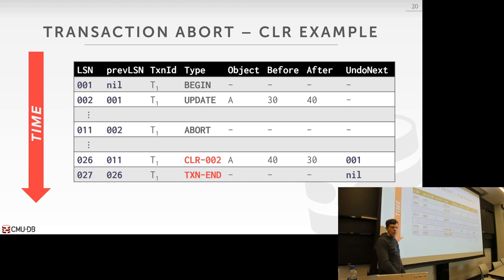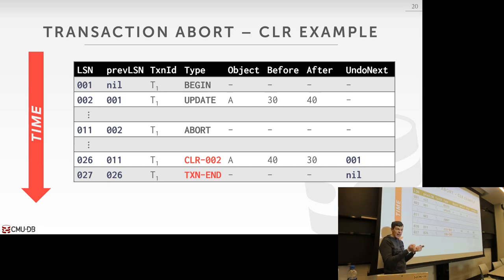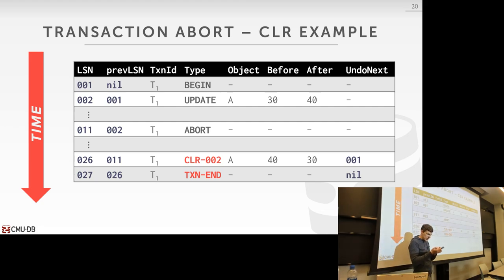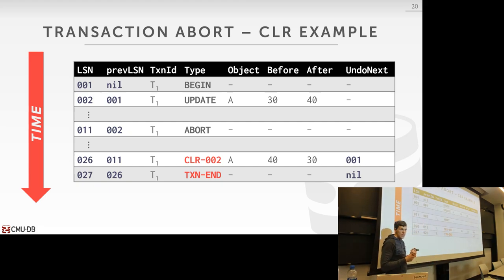This is very different from the commit one. Commit says if the database system tells you you committed, it has to guarantee that everything is durable. So any log record that corresponds to the changes that it made has to be written to disk up until the commit — we don't care about transaction end, that's internal. But for abort, it can immediately come back. Think about it — why should I wait for cleanup that doesn't affect the application's guarantee?